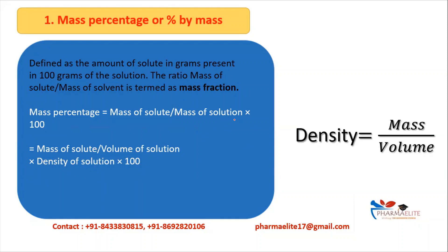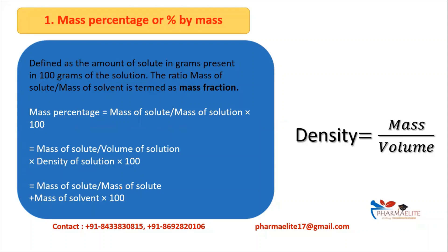Why are we substituting mass of solution with volume times density? We know that density = mass / volume, so mass = volume × density. Here we get volume of solution × density of solution × 100, where 100 stands for percentage. Another way to write mass of solution is mass of solute plus mass of solvent, because solution comprises solute and solvent. So it will be (mass of solute + mass of solvent) × 100.